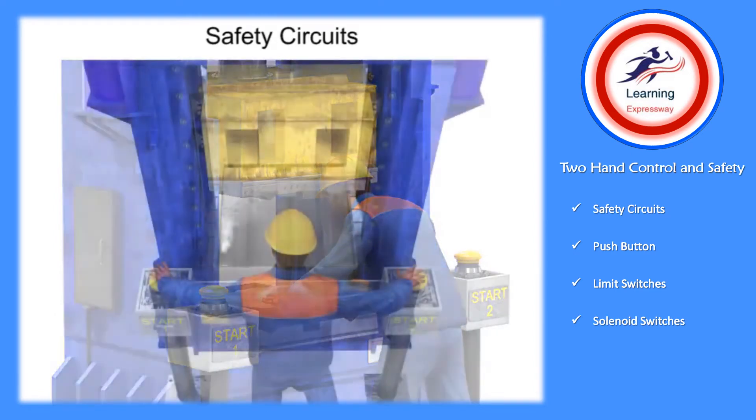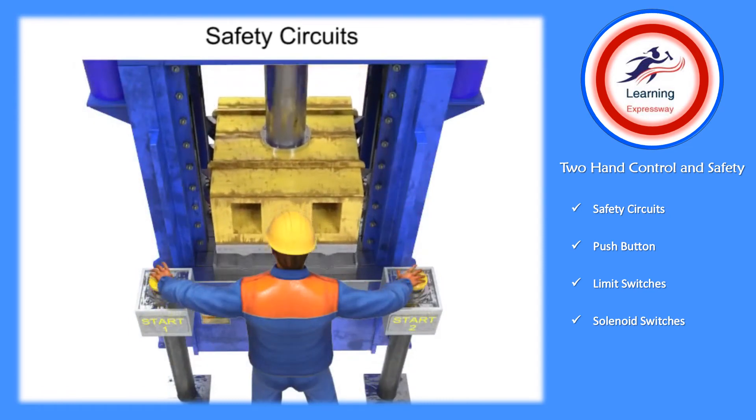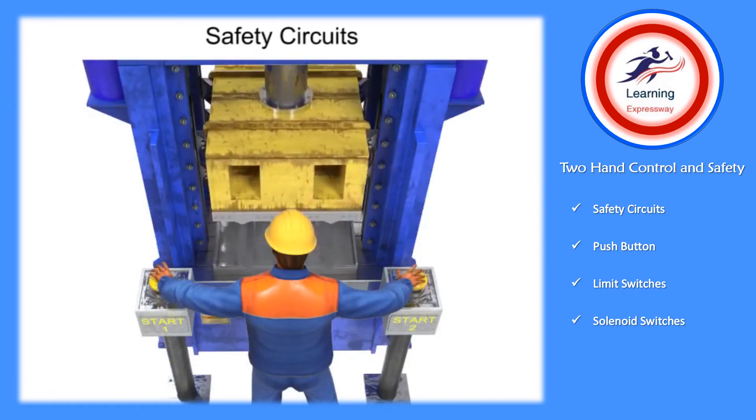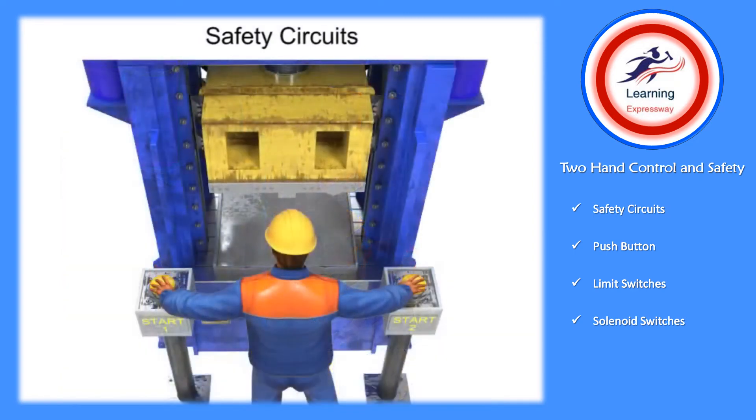Two-hand controls are an actuation device that requires the concurrent use of both hands of the operator to start a cycle. The purpose is to prevent the operator from having any part of his or her body in the work envelope of the machine during its operating cycle.